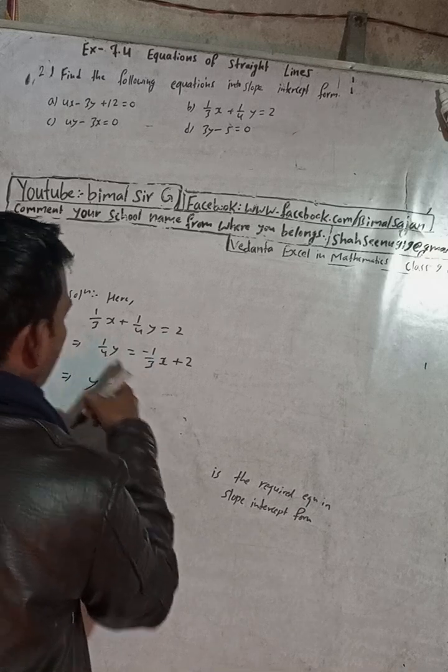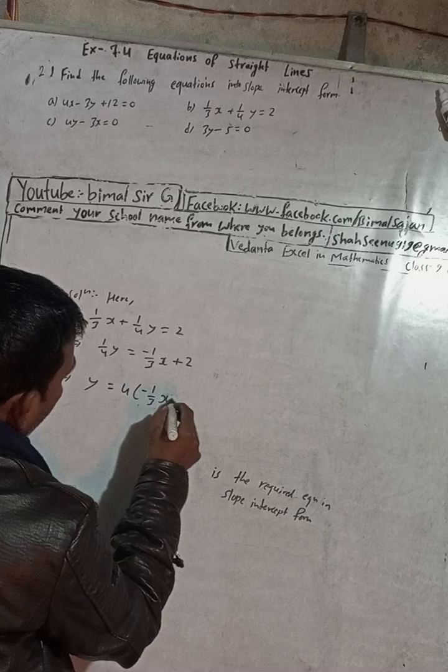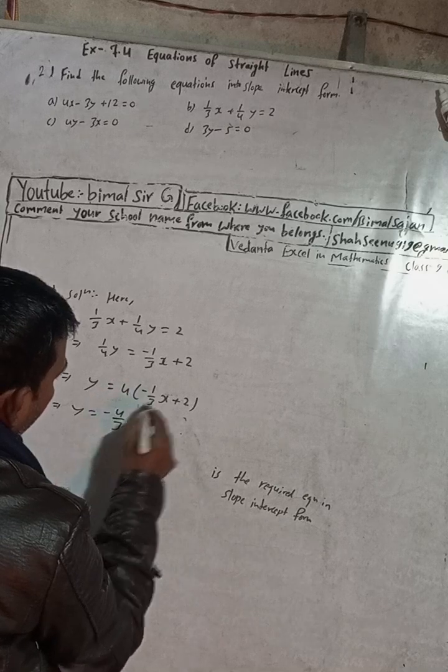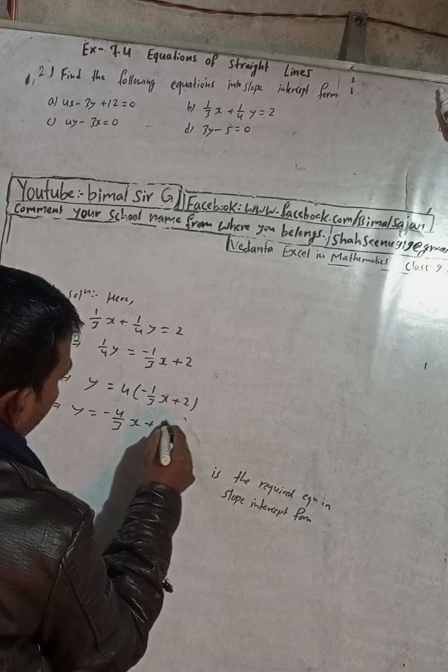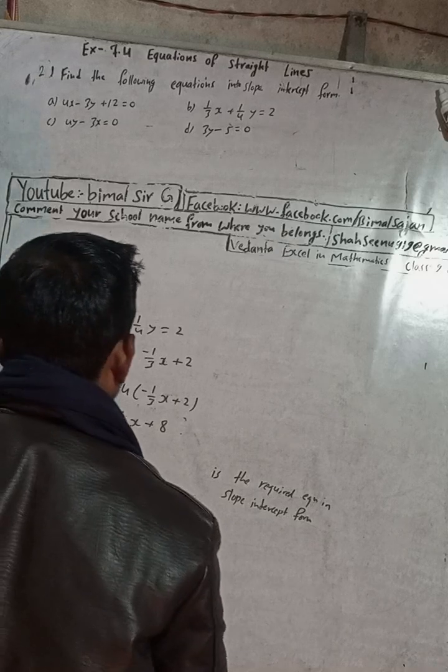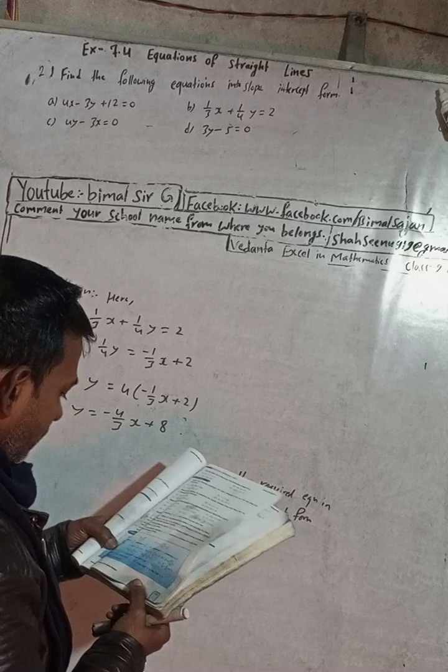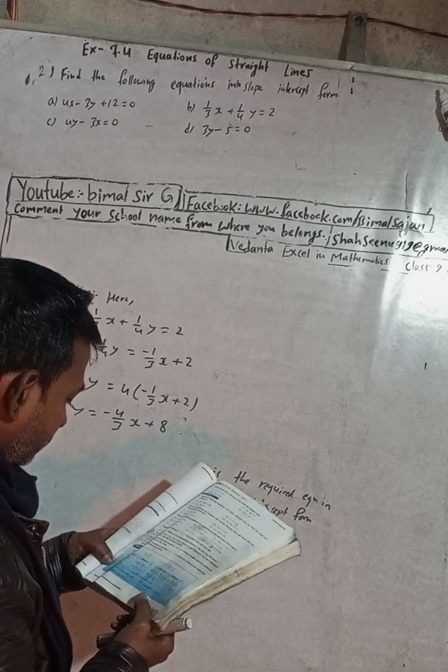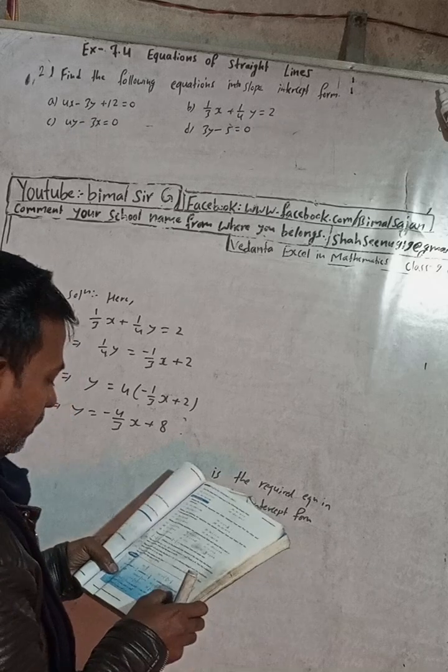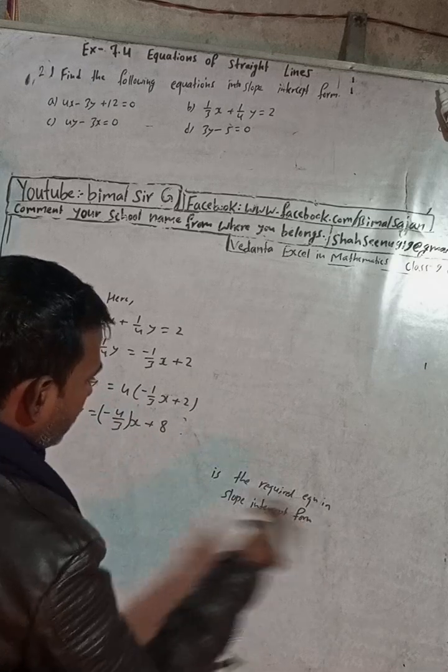Take this to that side. When you take this multiple form, it will be multiplied to both sides. Multiply both by 4: this is -1/3x + 2. This implies y = 4 × (-1), so -4/3x plus 4 × 2 is 8. So this is our required equation in slope-intercept form. The answer in the book is given as y = -4/3x + 8. They have taken brackets, it's okay, no problem. This is the required equation in slope-intercept form.